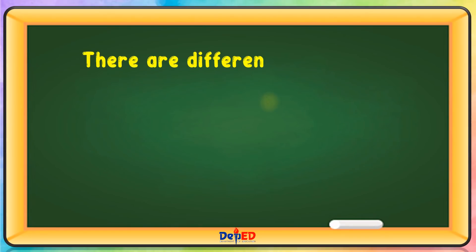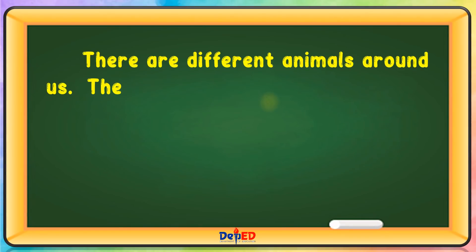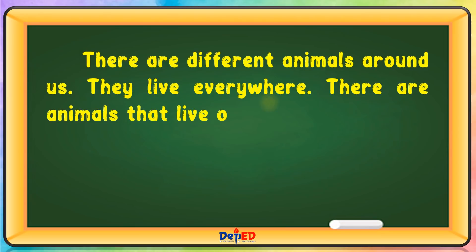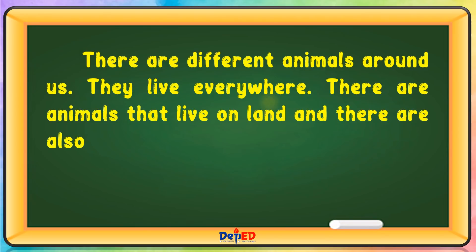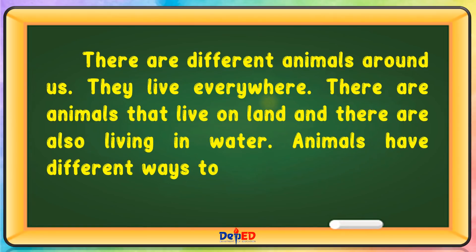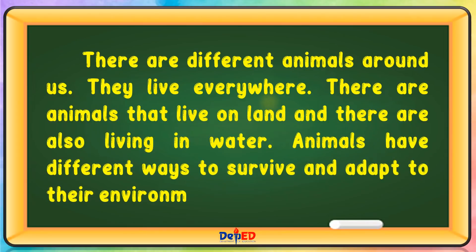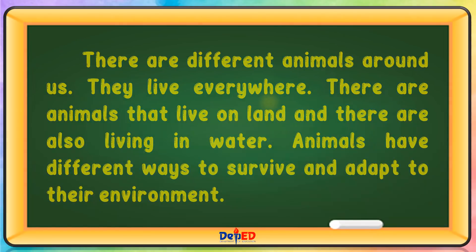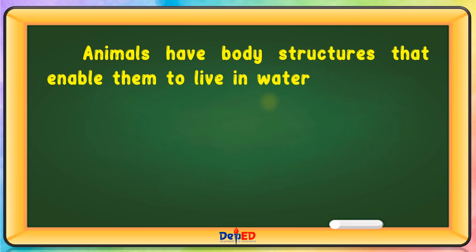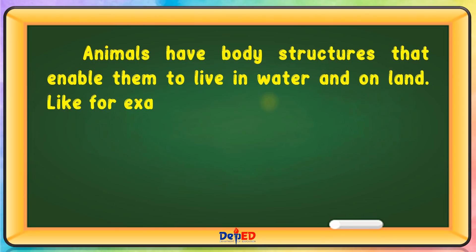There are different animals around us. They live everywhere. There are animals that live on land and they are also living in water. However, animals have different ways to survive and adapt to their environment. Animals have body structures that enable them to live in water and on land.